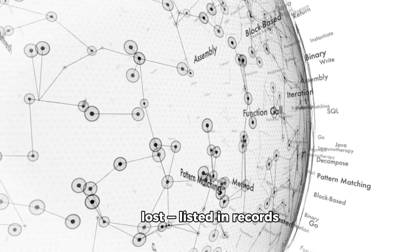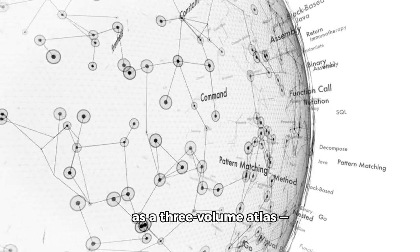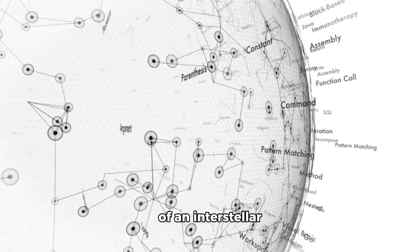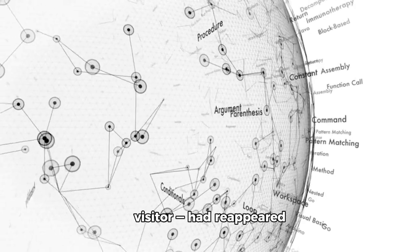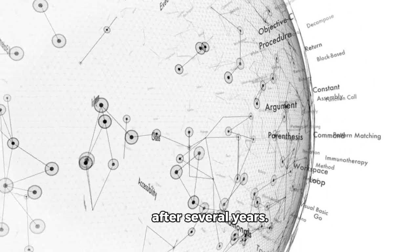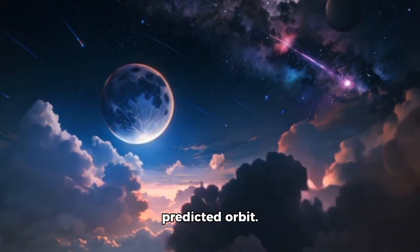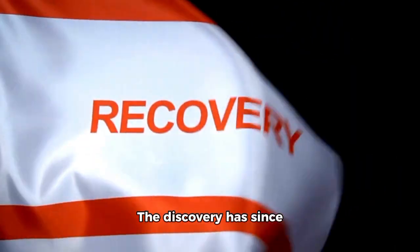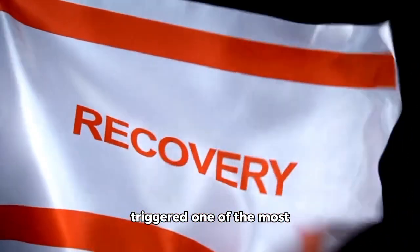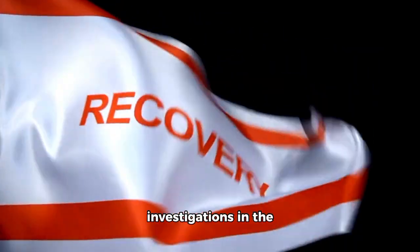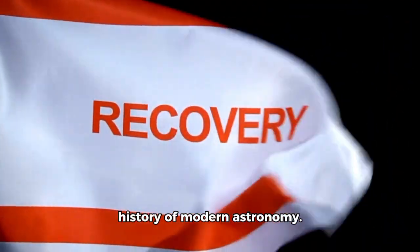A thing thought to be lost, listed in records as Three-I Atlas, an early identification of an interstellar visitor, had reappeared after several years. Yet the coordinates were all wrong. It was far from its predicted orbit. The discovery has since triggered one of the most comprehensive investigations in the history of modern astronomy.